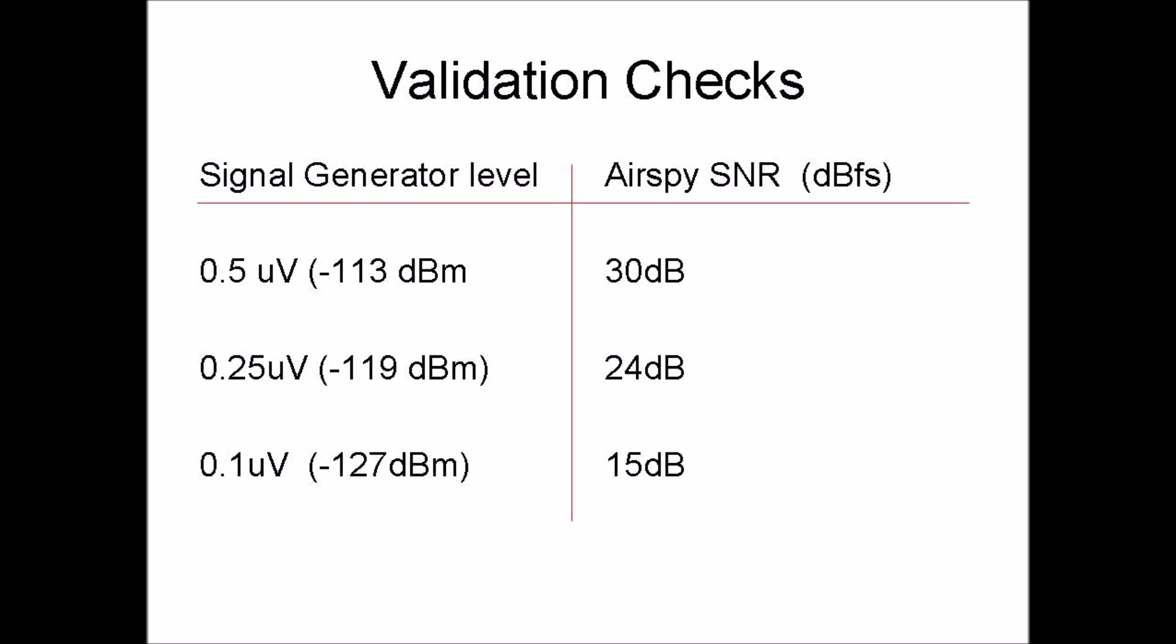Lowering it to one-quarter of a microvolt or minus 119 dBm, the signal-to-noise ratio was still 24 dB. And at the weakest signal my generator can produce, a tenth of a microvolt minus 127 dBm, the AirSpy peak was still 15 dB above the noise. A weak CW signal at this level still could be copied.